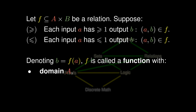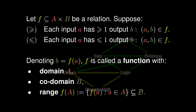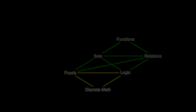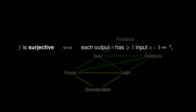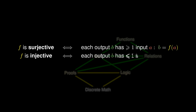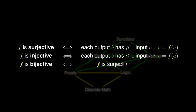F has domain A, codomain B, and range obtained by collecting all of the different possible outputs. In general, this range is simply a subset of B. We say that F is surjective if each output B has at least one input A. We say that F is injective if each output B has at most one input A. And we say that F is bijective when it is both surjective and injective.